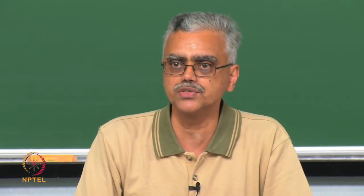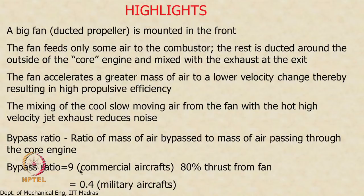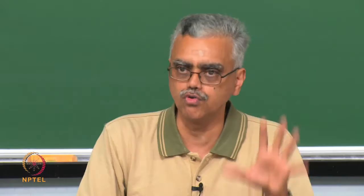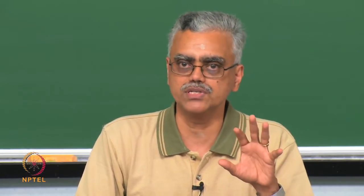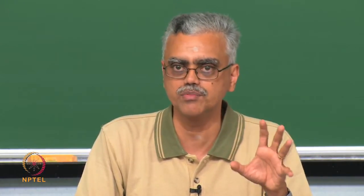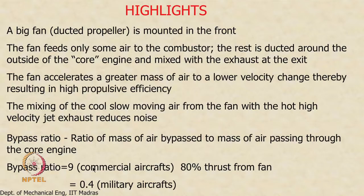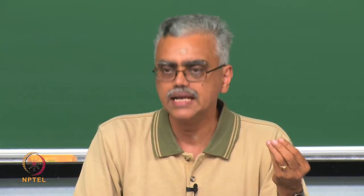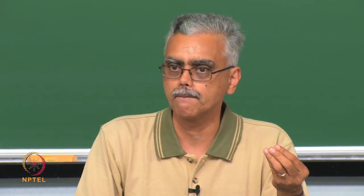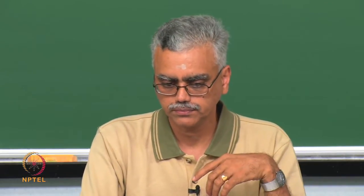Typical commercial aircraft today have bypass ratios as high as 9, classified as high bypass ratio turbofan engines. Bypass ratios of 3 to 5 are usually classified as low to moderate bypass ratio engines, while a bypass ratio below 1 — common in military aircraft — is low bypass. A ratio of 3 to 5 is moderate, 9 is high, and 12 to 14 will be ultra-high bypass ratio engines. High bypass ratio engines generally produce about 80% of the thrust from the fan.